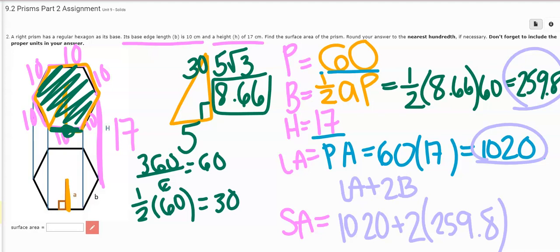And I'm going to get, for my surface area, 1539.6. Now, what are my units? Centimeters squared. And that's how I'm going to type it in.